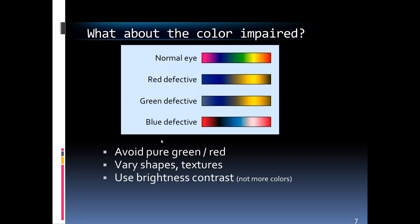Another thing to keep in mind when choosing colors is that people who are color-impaired or colorblind will not be able to see differences between things like red and green. With the normal eye you see the full color spectrum, but with red-defective or green-defective vision those differences disappear. You'll want to avoid pure greens and reds. There's a sizable portion of the population, especially males, that have red-green colorblindness.